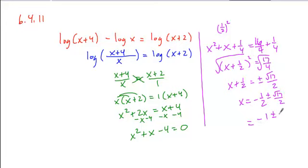So my exact answer looks like this. I think because we have a log of x, I know I can't have a negative number here. So the negative 1 minus root 17 over 2 is extraneous. Negative 1 plus root 17 over 2 will be my solution.